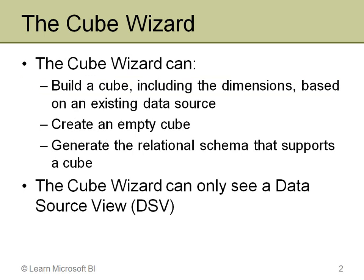Even at the beginning screen, it's a little bit different from 2005. There are three options. One is to build a cube on an existing data source, and if you haven't defined the dimensions or need to define additional ones, it will go ahead and create the dimensions as well. Unlike 2005, though, it does not create hierarchies for you and doesn't add all of the columns as attributes.